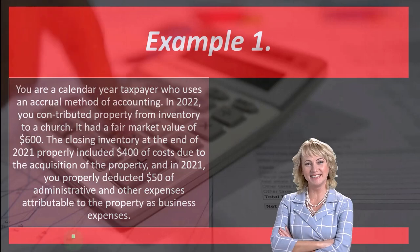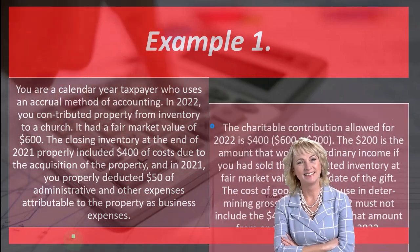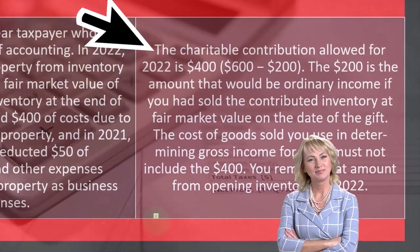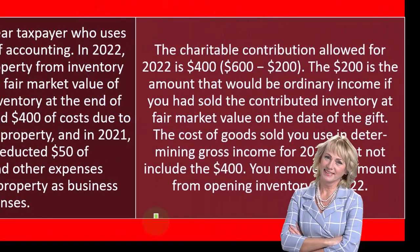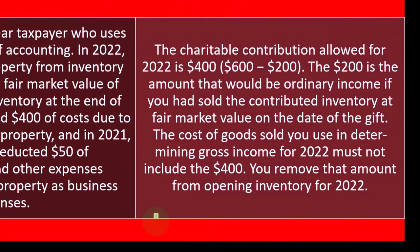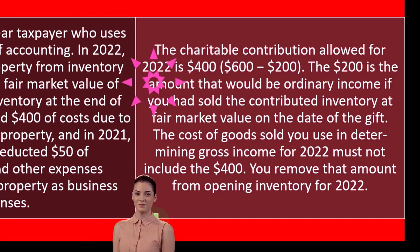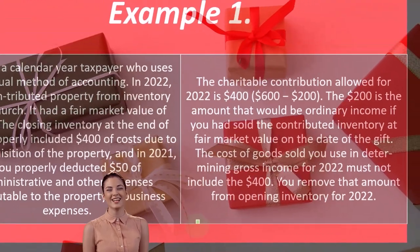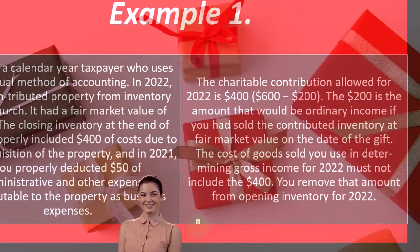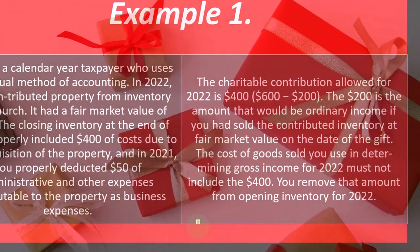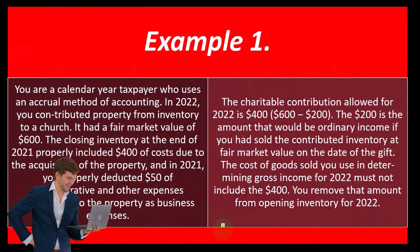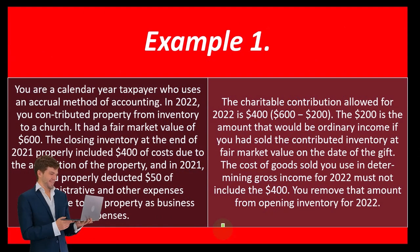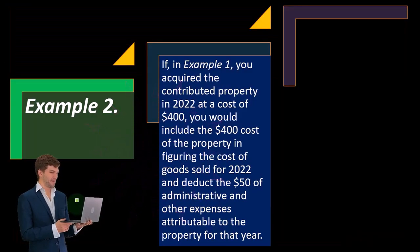In 2021, you properly deducted $50 of administration and other expenses attributable to the property as business expenses. The charitable contribution allowed for 2022 is $400, which is the $600 minus $200 — the $200 being the amount that would be ordinary income if you had sold the contributed inventory at fair market value on the date of the gift. The cost of goods sold used in determining gross income for 2022 must not include the $400; you remove that amount from opening inventory for 2022.